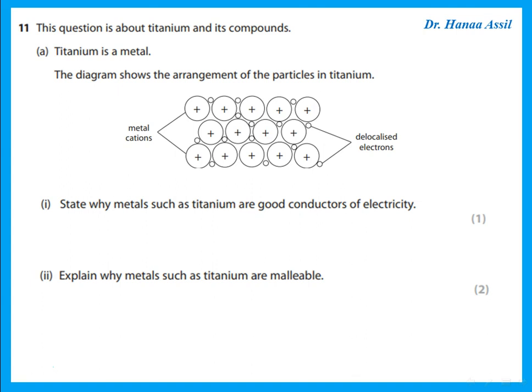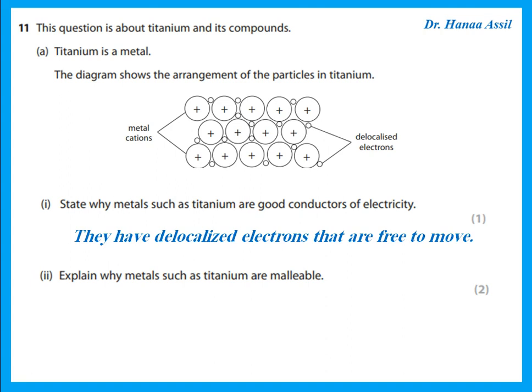Question 11 is about titanium and its compounds. The diagram shows the arrangement of particles in titanium. State why metals such as titanium are good conductors of electricity — metals have delocalized electrons that are free to move. The delocalized electrons are the electrons in the outer shell of each atom; they are free to move, and when they move they conduct electricity.